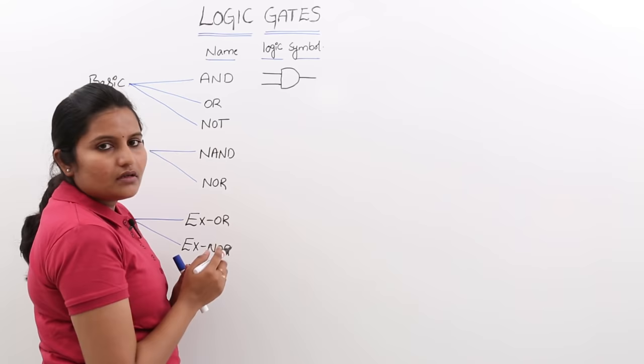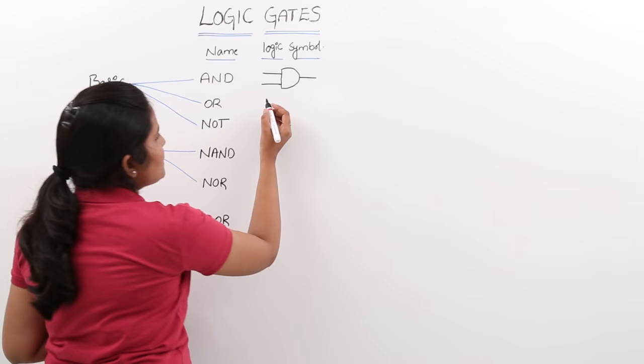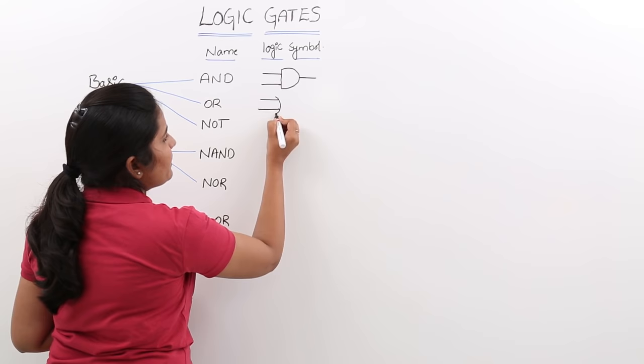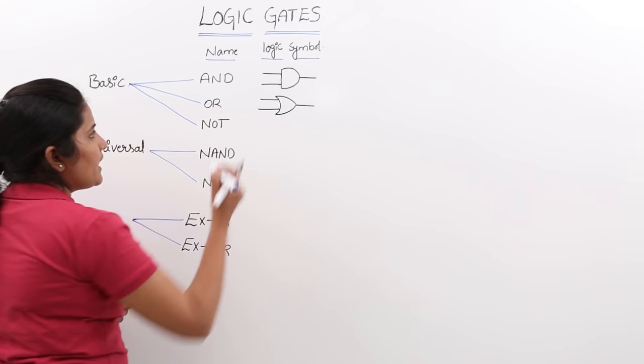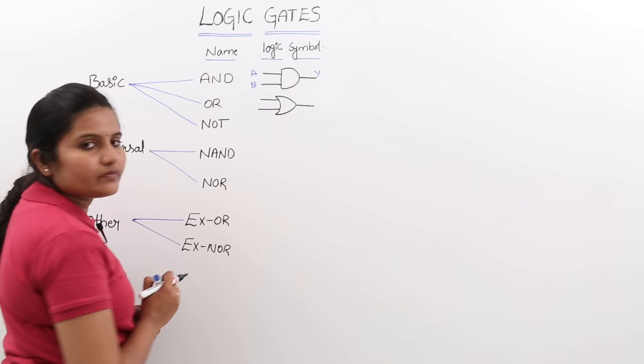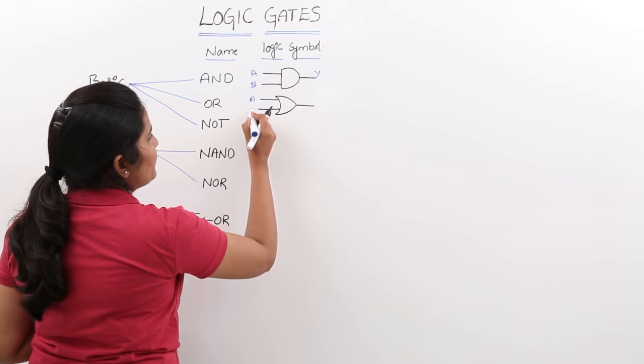Now we are going to the logic symbol for OR gate. For OR gate, the logic symbol looks like this. Here these 2 are inputs — you can label them A and B — and this is output Y. Similarly for the AND gate, these 2 are the inputs and this is the output.